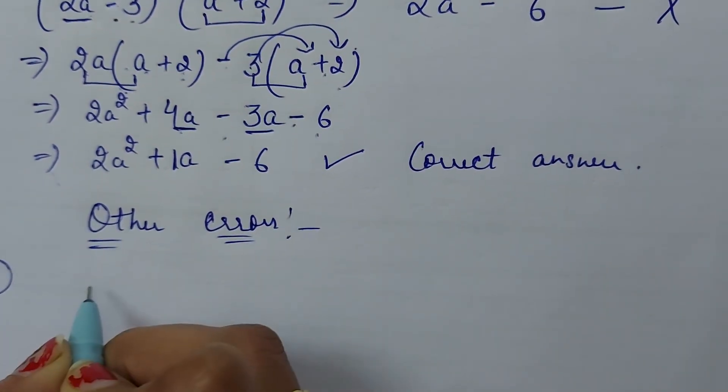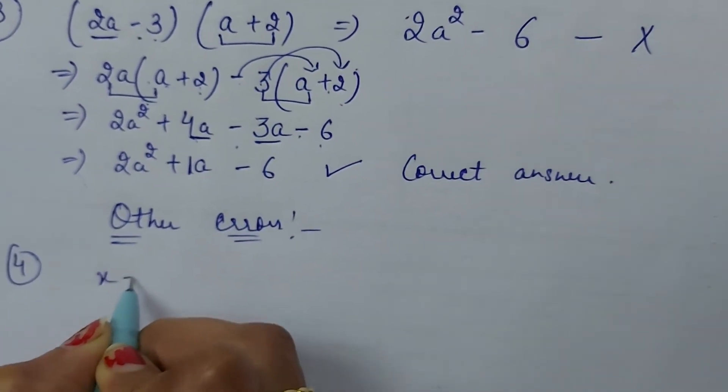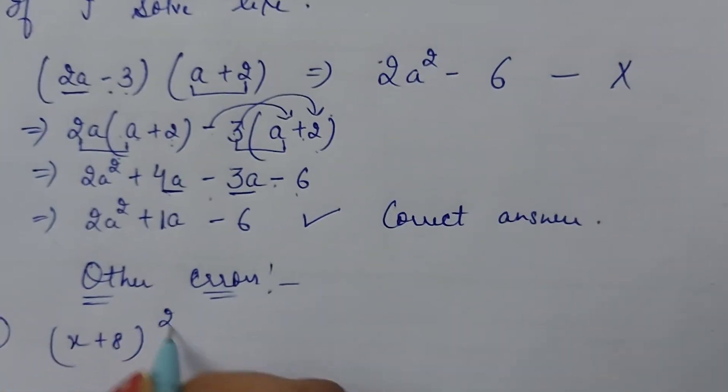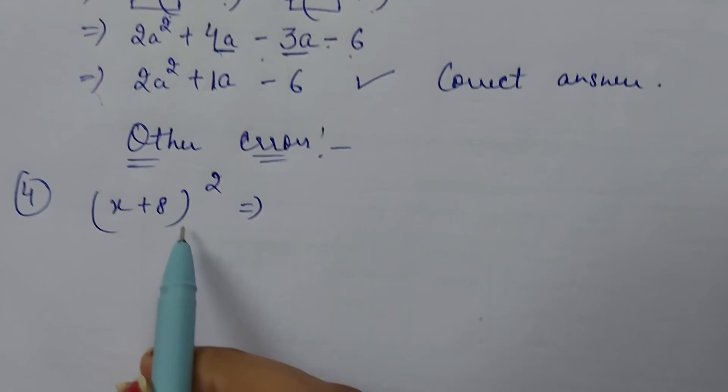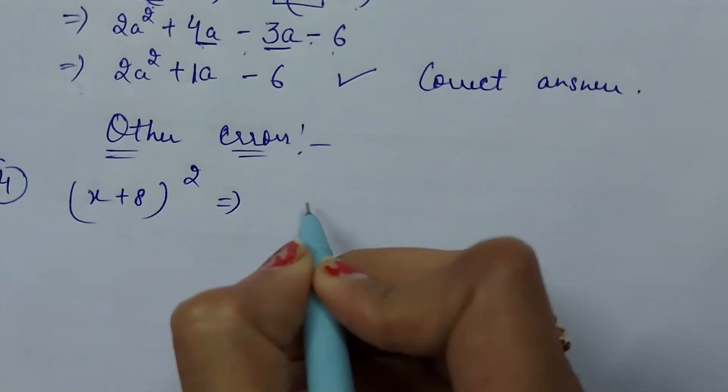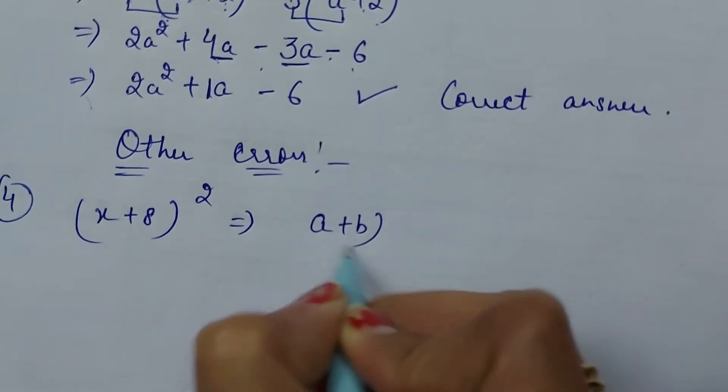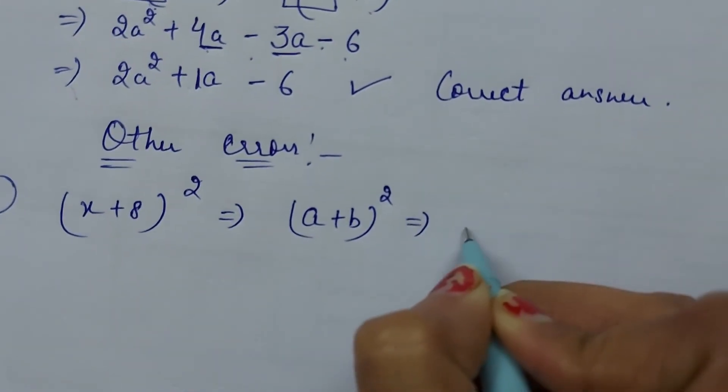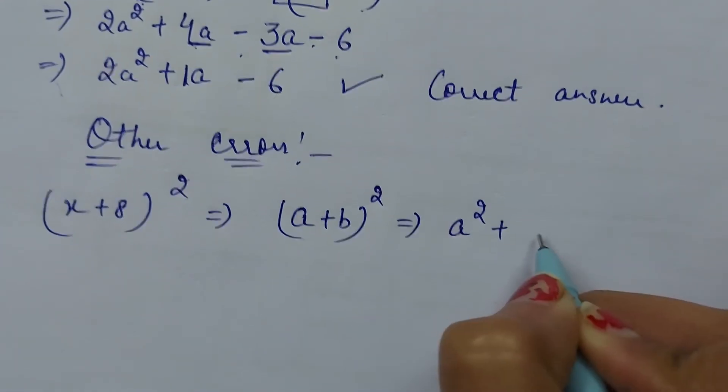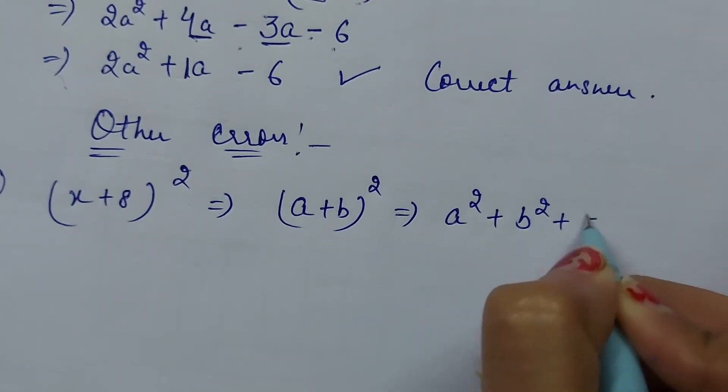4th topic is x plus 8 ka whole square. Friends, hum dubara aise likhein: x plus 8 ka whole square. Yani ki, humare paas identity ka ek formula hota hai. a plus b ka whole square. That means, a square plus b square plus 2ab.